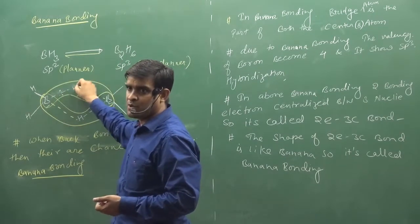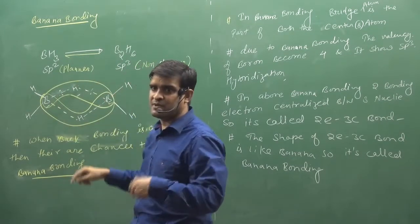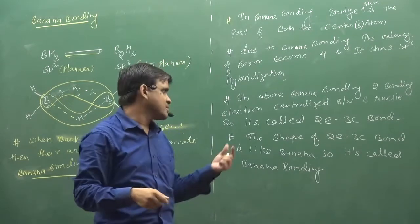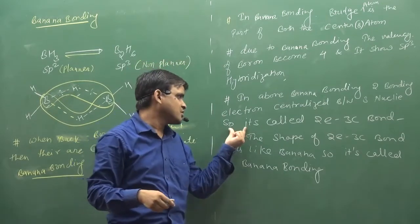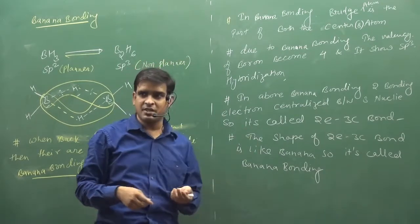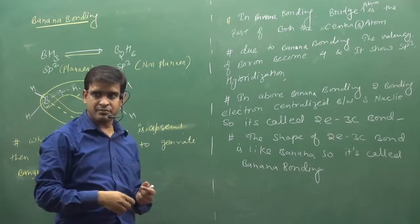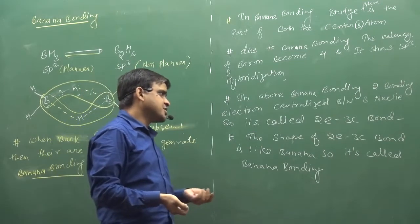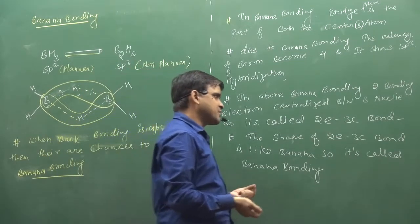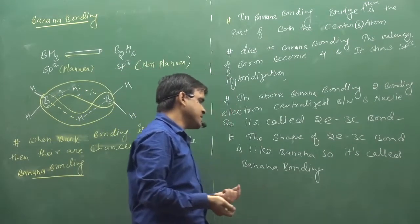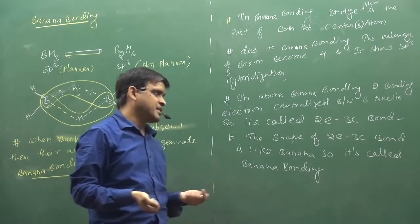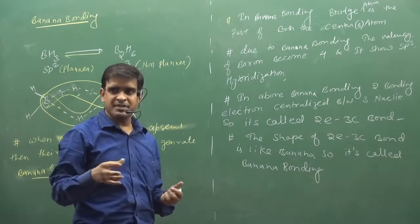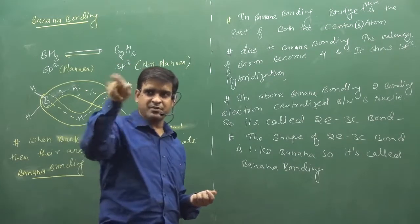So I can say: it is called a 2-electron 3-center bond. The shape of the 2-electron 3-center bond is like a banana. So it is called banana bonding - it is named after the shape of a banana.